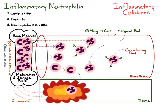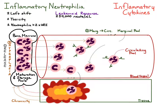There is a special type of inflammatory neutrophilia called a leukemoid response, wherein the neutrophilia exceeds 50,000 neutrophils per microliter. This leukemoid response occurs in select types of inflammation — usually strong neutrophilic, suppurative inflammatory responses.